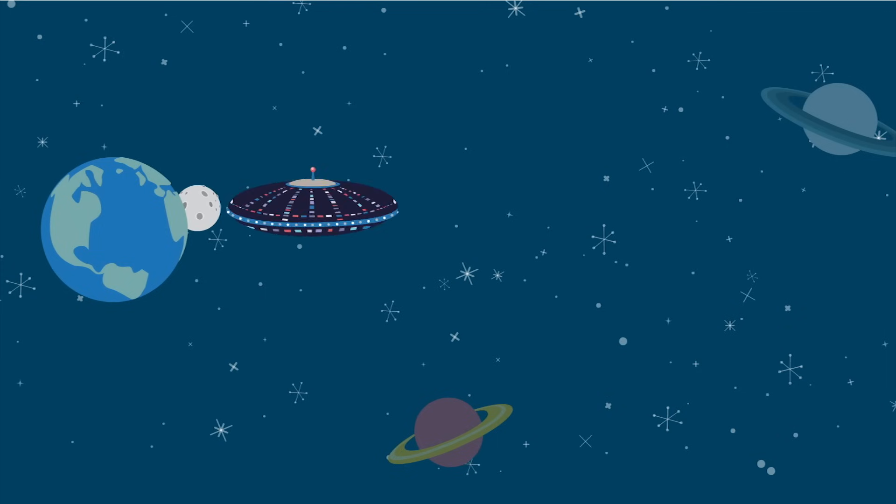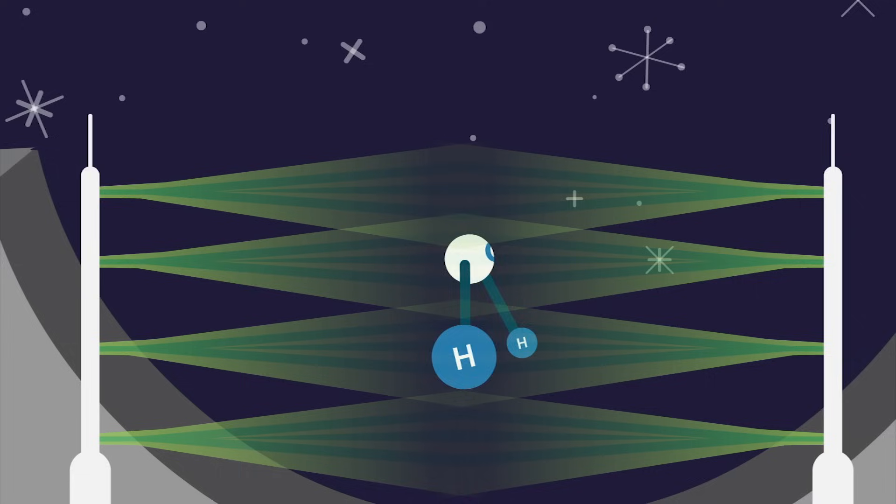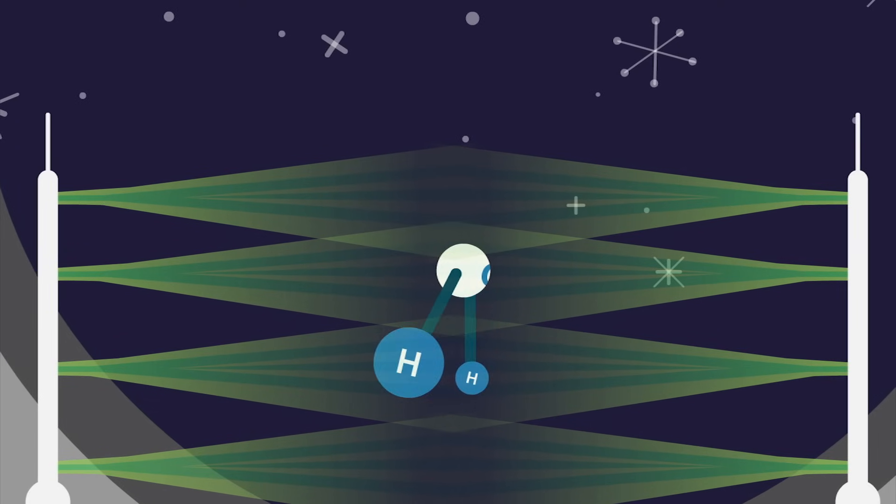As you probably know, a water molecule consists of two basic parts. Hydrogen, the simplest of all elements, has been around since close to the beginning of our universe. Oxygen entered the scene several hundred million years later, after stars began to form.